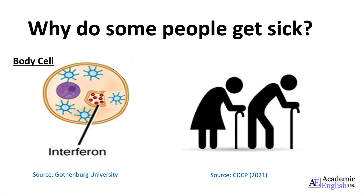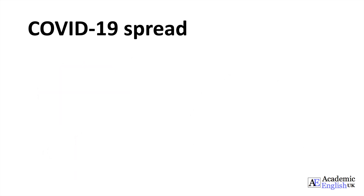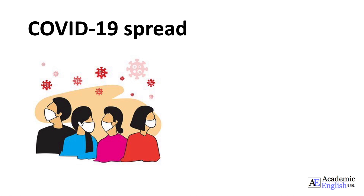Now, I will move on to how COVID-19 is spread. COVID-19 spreads mainly from person to person, and this can happen between people who are in close contact with one another. A person infected emits aerosols when they talk or breathe. Aerosols are infectious viral particles that can float or drift around in the air for up to three hours. Another person can breathe in these aerosols and become infected. This is why everyone should cover their nose and mouth when they go out in public and follow the two-metre rule.